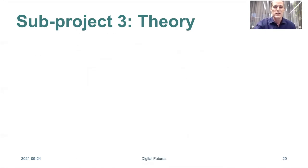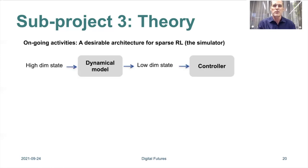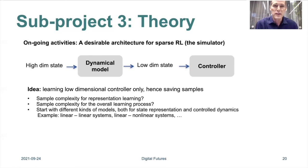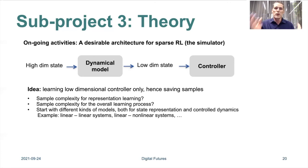A promising research direction in this project concerns the design of the simulator or model. We advocate a model architecture with two layers: one layer that takes as input the high-dimensional state of the complex system and outputs a latent state with much reduced dimensionality. This latent state serves as the input to the control policy, making it much easier to learn an optimal control policy. Key questions include how many samples are needed to learn the embedding toward the latent state, and how many are needed to arrive at an overall optimal policy.